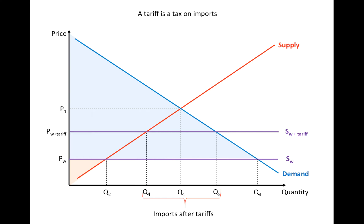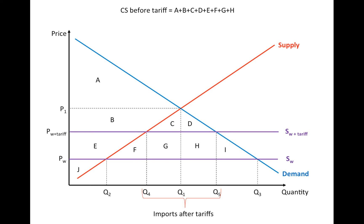How do we see from this diagram how society at large is doing? First we need to name all the areas in the diagram. I don't recommend shading the areas because in the actual exam you can only use blue pen, black pen, and pencil, which can become quite messy. It's much clearer to use the area labels to represent the changes. The consumer surplus before the tariff comprised all areas A, B, C, D, E, F, G, H, and I.